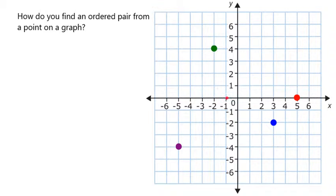we see that it is back 2 from the origin where the two axes cross, and it's up 4. So that has a position of negative 2, 4.